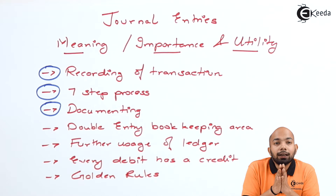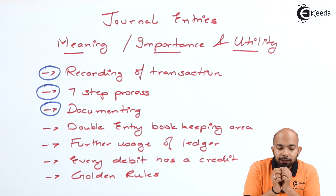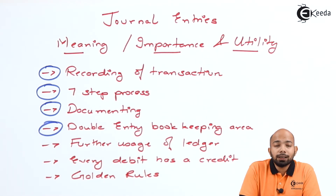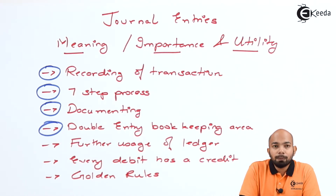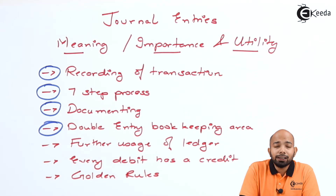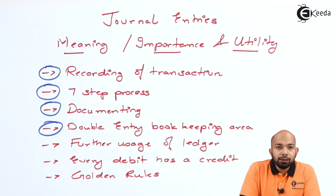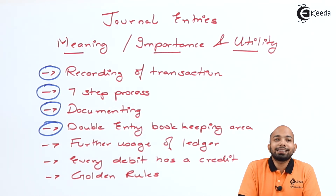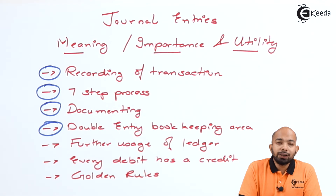Accountancy has been classified further as a double entry bookkeeping system. We have a single entry system and we have a double entry system. Journal entry is a part of the double entry system whereby we have a debit and a credit. This gives more clarification on how any transaction has been credited or debited. If one account is debited, there will be a further account which will be credited to it — this is called the double entry system, which is directly related to journal entries.